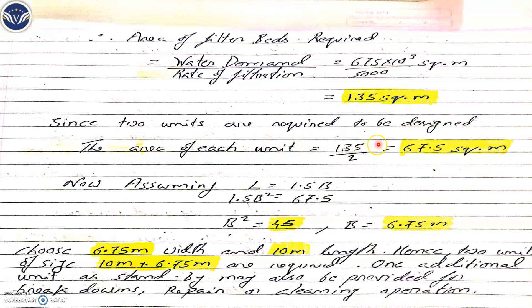Taking two units into consideration, we divide 135 by 2, giving 67.5 square meters per unit. Using the relation L = 1.5B, we rewrite it as 1.5B² = 67.5, so B² = 45, giving B = 6.75 meters. Now you have the width and can calculate the length. These dimensions apply to each of the 2 units.